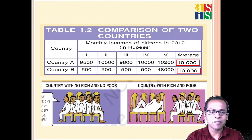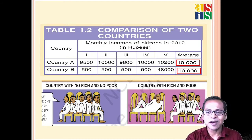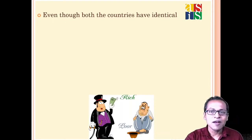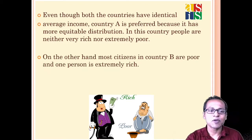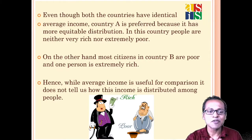Looking at the diagram: in Country A, five persons are sharing four seats roughly equally. In Country B, one person is occupying all four seats while the other four persons are cramped into the remaining space. Both countries have identical averages, but Country A is preferred because people are neither very rich nor very poor. Country B has many poor persons and one extremely rich person. So averages are useful for comparison but do not tell how income is distributed — they hide disparity.